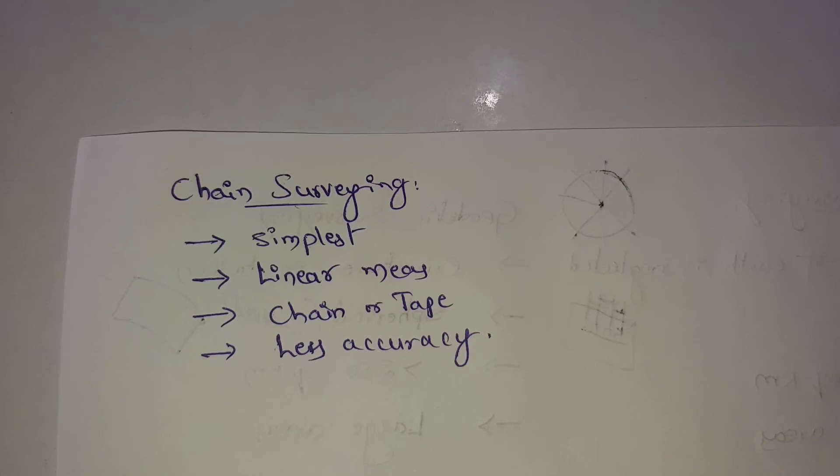These include Gunter's chain, engineer's chain, and revenue chains. Gunter's chain length is 66 feet, engineer's chain is 100 feet.